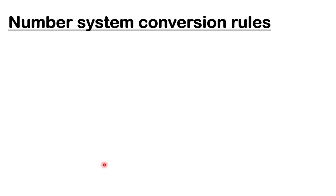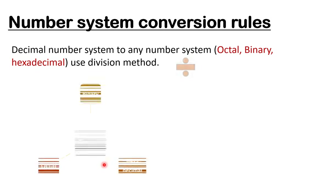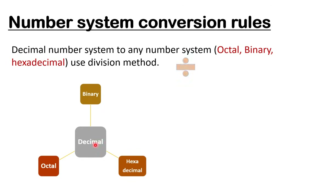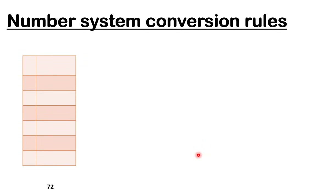The first rule: if you want to convert a decimal number to any number system, you have to use the division method. Whether converting to binary, hexadecimal, or octal, you divide the number by the base of the target system. For example, consider the decimal number 72 — we divide it by base 2 to convert it to binary.